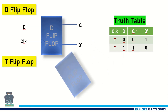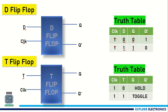Coming to T flip-flop, it has an input called T and we observe the output at Q. When the clock is at the positive edge, when T is equal to 0, this flip-flop is going to hold the value of the output. Means if Q is equal to 0 previously, it will be held as 0. If Q is equal to 1 previously and input 0 is given, it will be held as 1 — it holds the same state when T is 0.